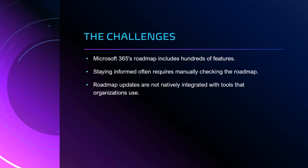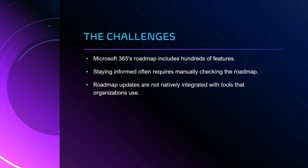The challenges. Staying on top of M365 feature updates is essential for professionals who rely on Microsoft tools for productivity and collaboration. However, with the constant evolution of M365 and its extensive roadmap spanning services like Teams, SharePoint, and Outlook, it can be challenging to keep up. The roadmap includes hundreds of updates, and tracking them manually or waiting for periodic summaries often results in missed opportunities or delayed adoption. What makes it harder is the lack of native integration between roadmap updates and the tools organizations typically use to plan and manage rollouts.